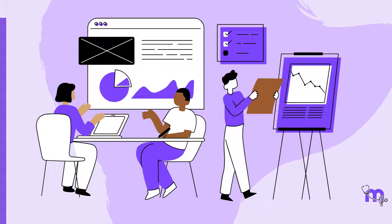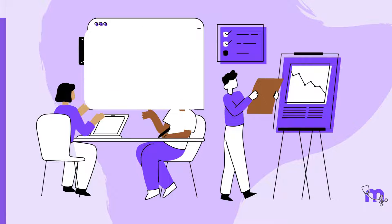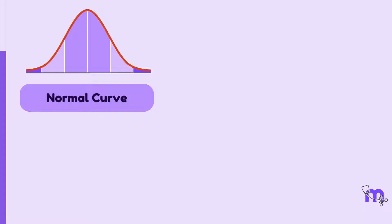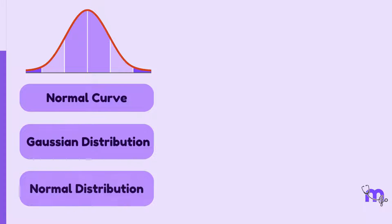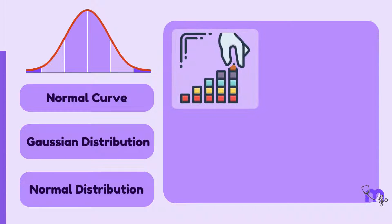There are many statistical tools that help us in studying data, and the normal curve is one of those. The normal curve, also called the Gaussian distribution or the normal distribution, is a fundamental concept in statistics that helps us understand and analyze various phenomena.